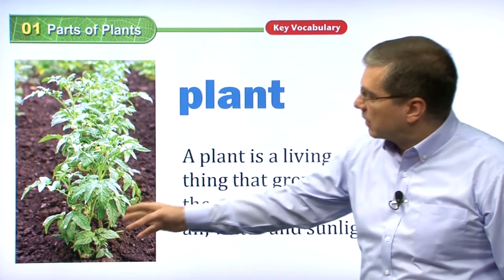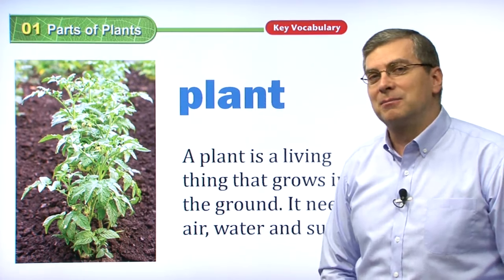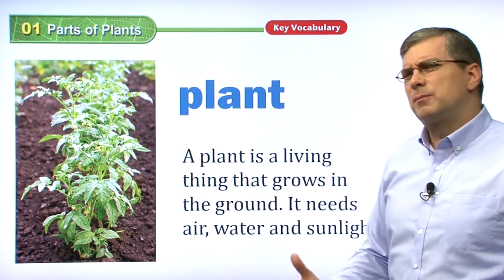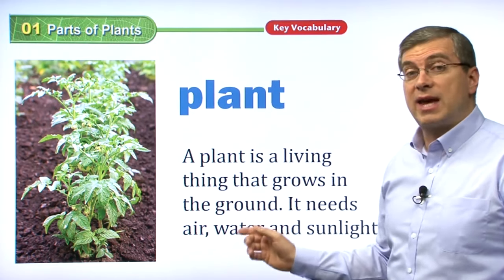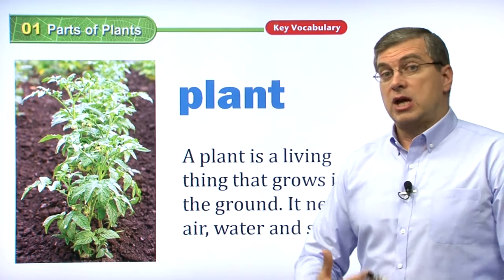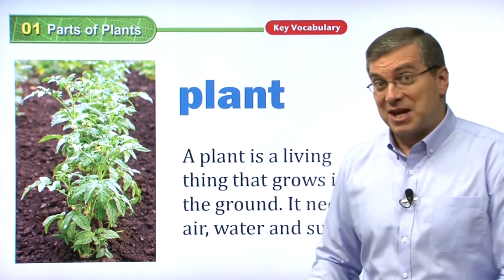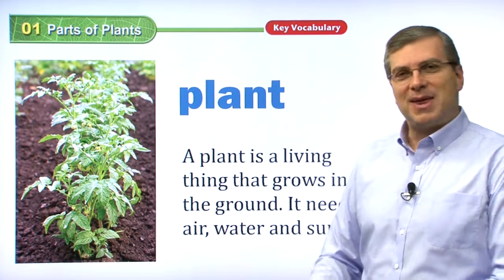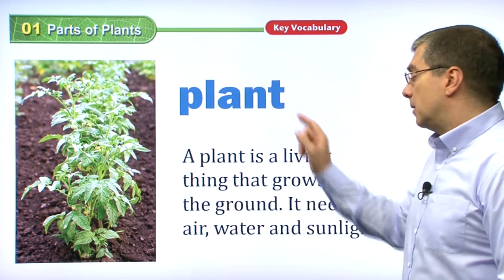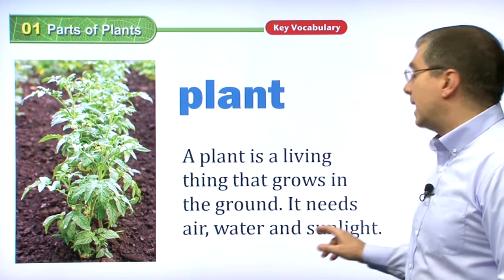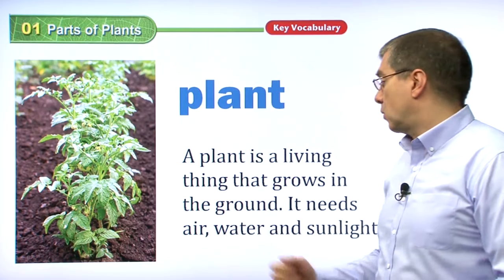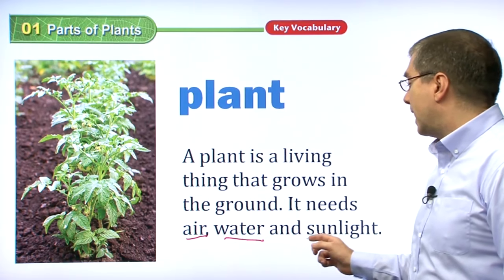Here we have a plant — these are types of plants, perhaps in your garden. What is a plant exactly? A plant is a living thing that grows in the ground. We are living things too — human beings and animals — but we don't live in the ground. Plants can't move; they are stuck in the ground. A plant needs air, water, and sunlight. So there are three things that a plant needs to grow: air, water, and sunlight.